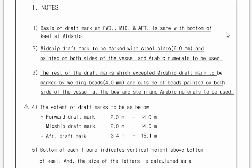In the beginning, they give some notes about the booklet. The base of the draft mark — forward, mid, and aft — is the same as the bottom of the keel at midship. This explains the reference point: the bottom of the keel. The midship draft mark should be marked with a steel plate. Forward draft mark is between 2m and 14m, midship between 2m and 14m, and aft draft mark between 3.4m and 15.1m.